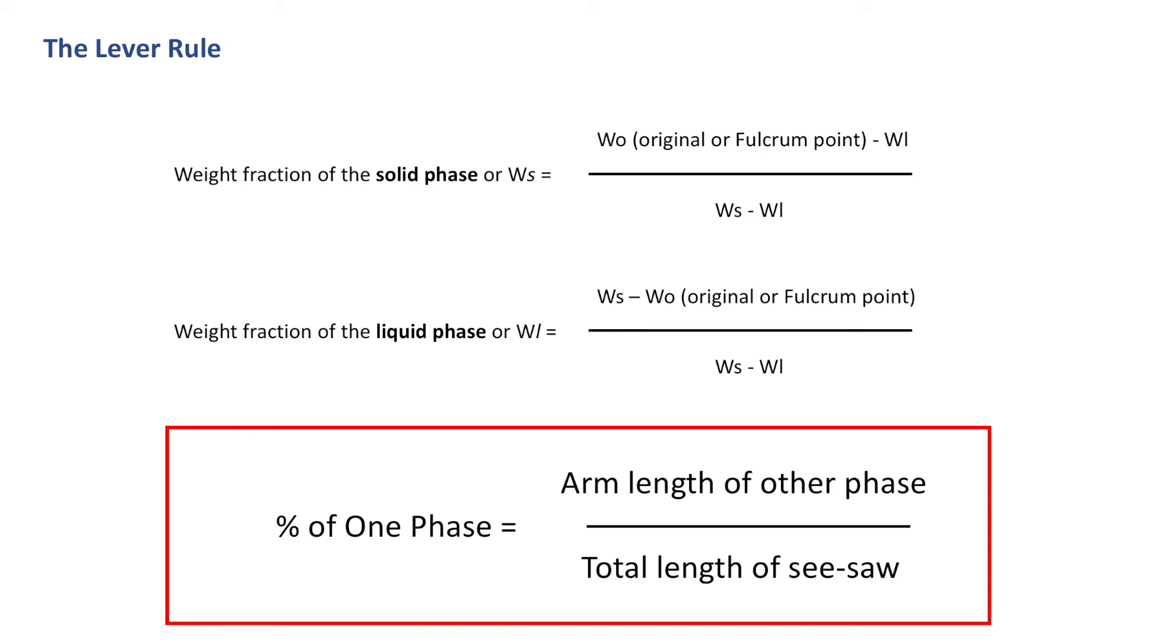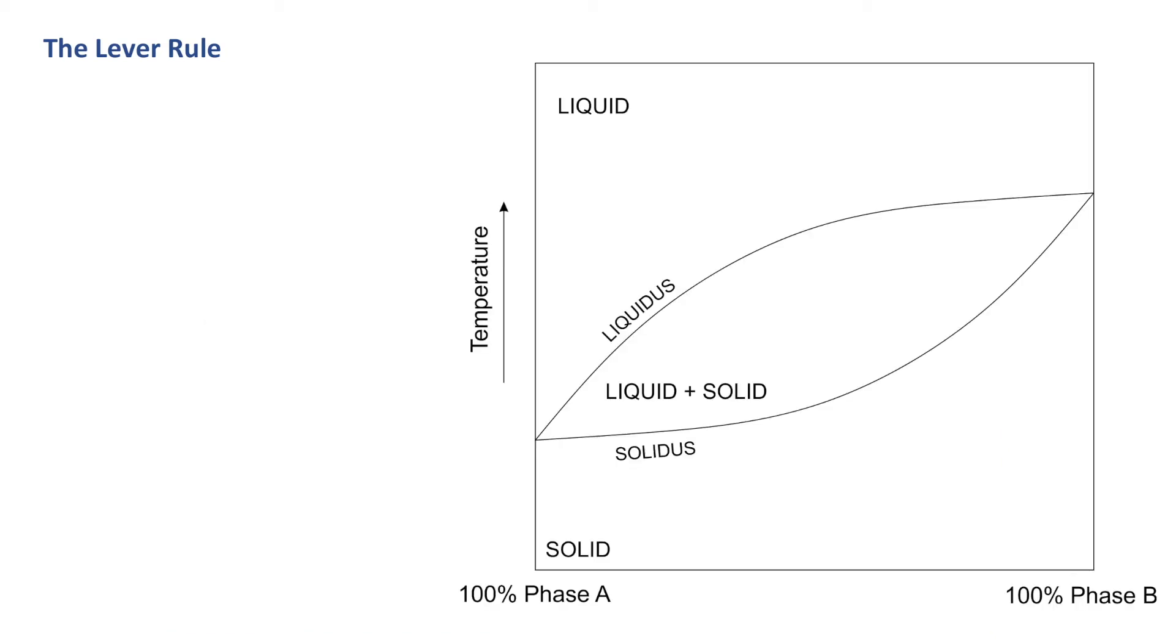Picture a phase diagram. This is an example of a solid solution phase diagram. We have two phases on the x-axis: 100% phase A and 100% phase B. Anything in between is a mixture of phase A and phase B. On the y-axis we have increasing temperature. For example, right in the middle we have 50% phase A, 50% phase B. This line represents the liquidus - anything above this line is 100% liquid. This line represents the solidus - anything below this line represents 100% solid. Anything in between these two lines represents a mixture of solids and liquids.